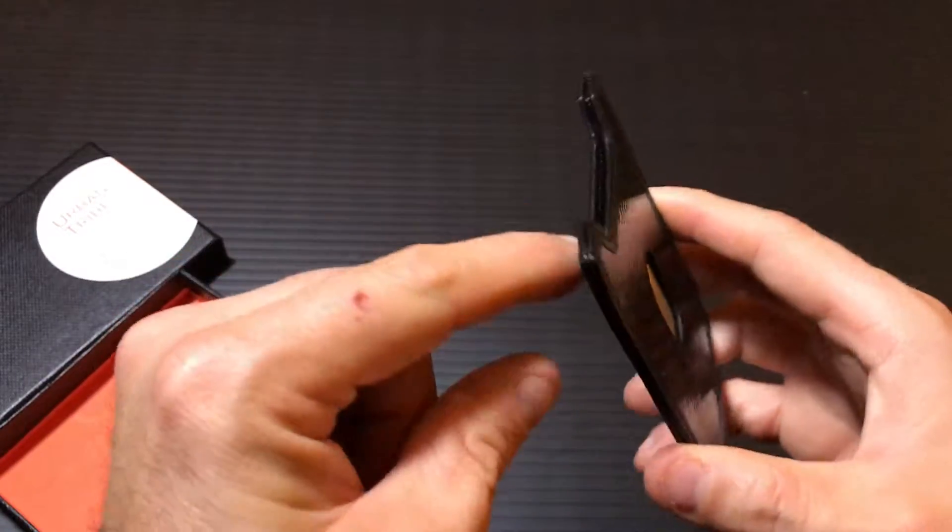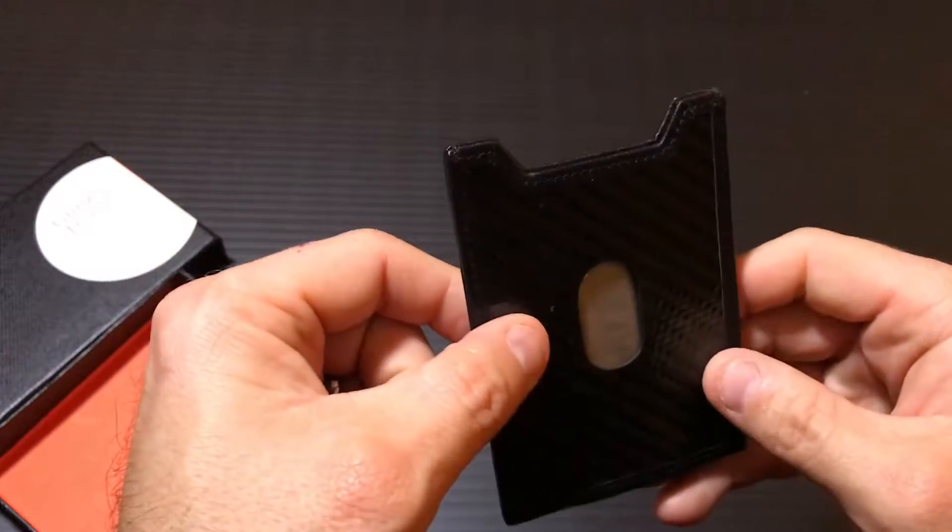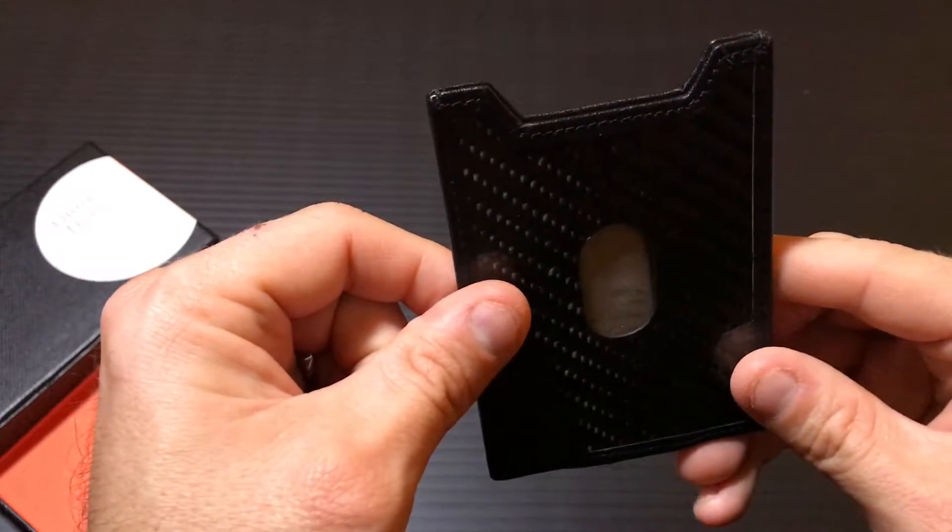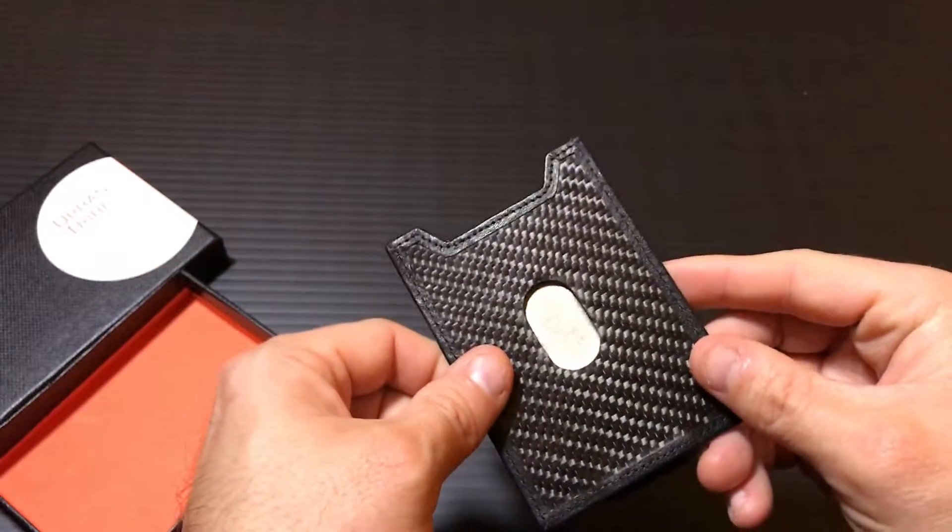There is a shielding material on the inside of the card holder which allows you to protect against RFID scanning. You can see it right here through the quick access hole.